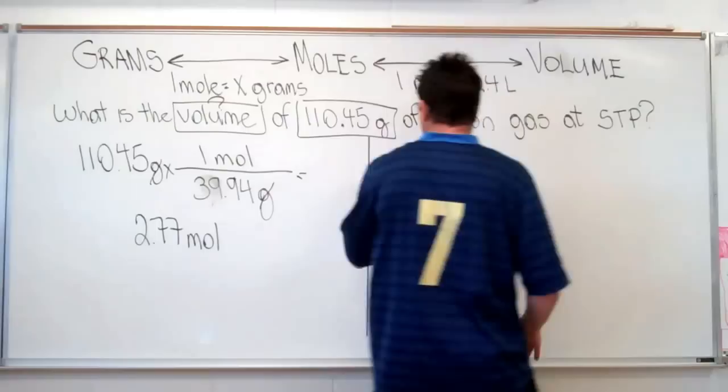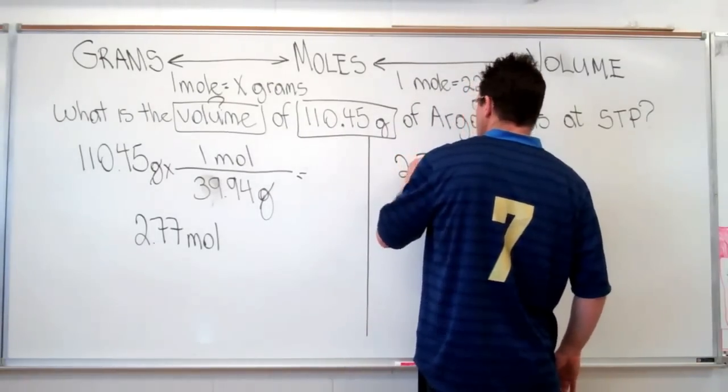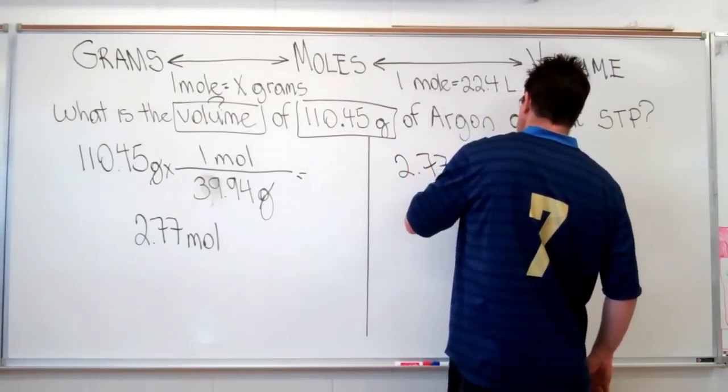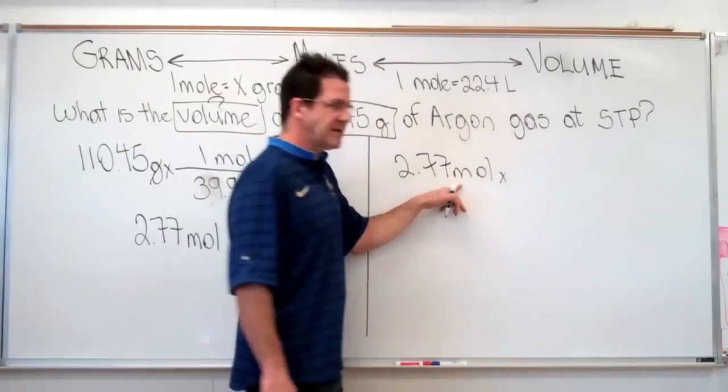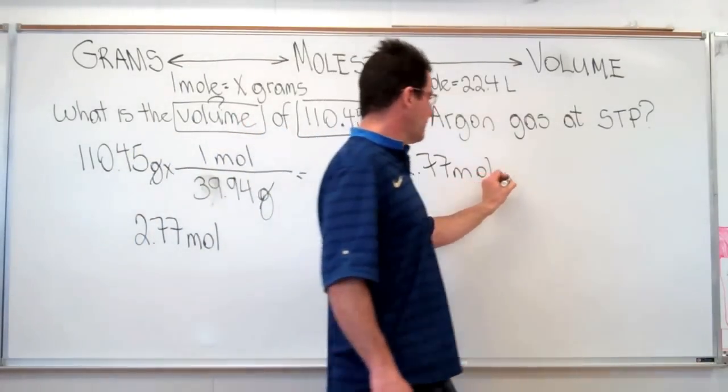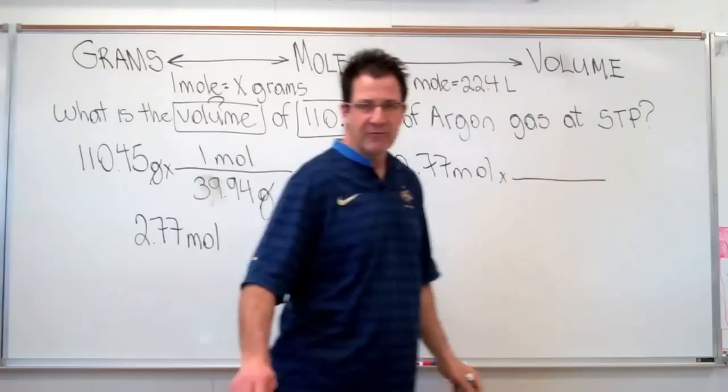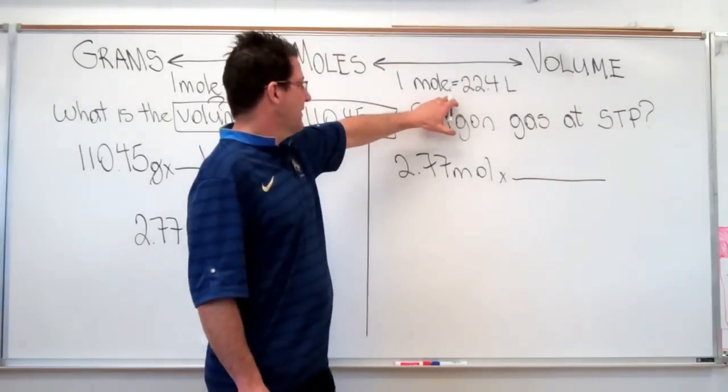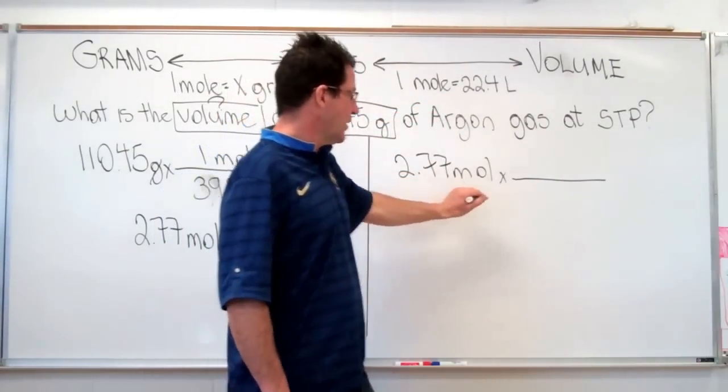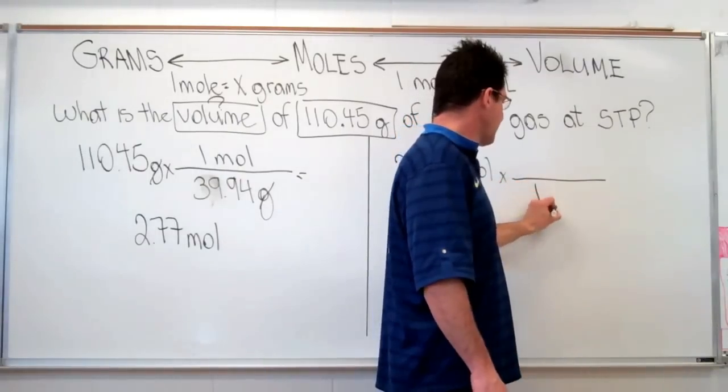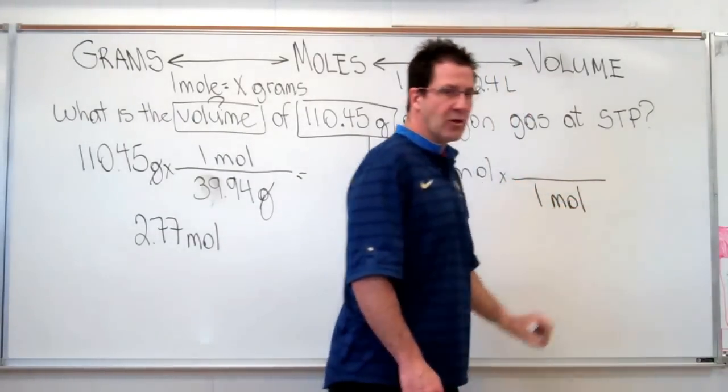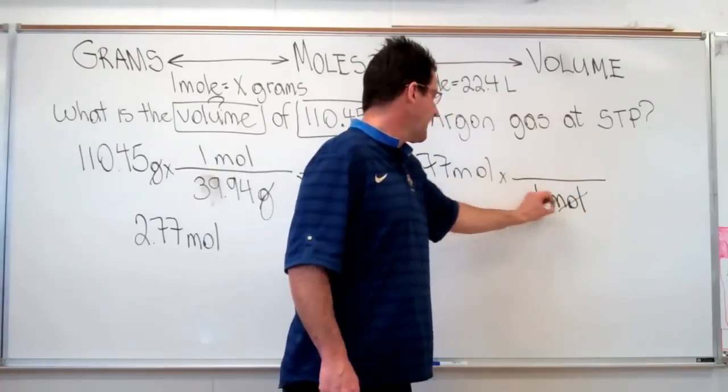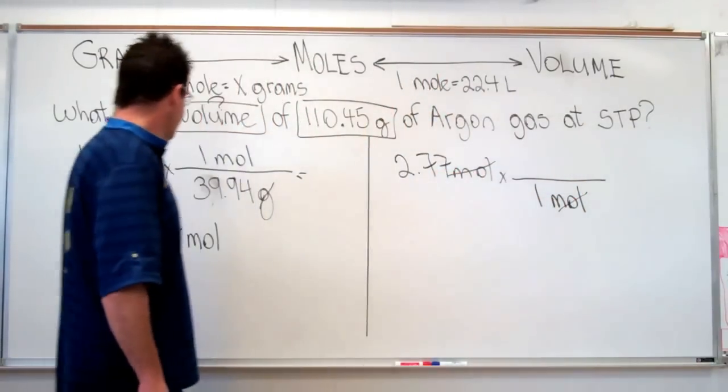So now we're going to bring our moles over here. We have 2.77 moles. We put our multiplication sign down. Put our line for our division for our conversion factor. In this case, we're going to use this conversion factor, one mole. We have a mole here. Therefore, we know automatically the mole goes in the bottom. We do that so we can cancel, just like we did over here.